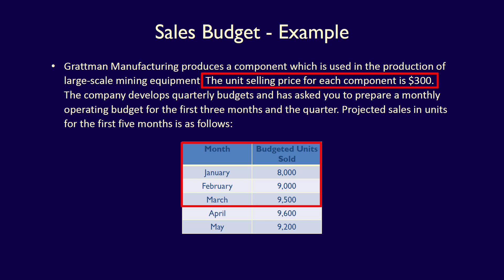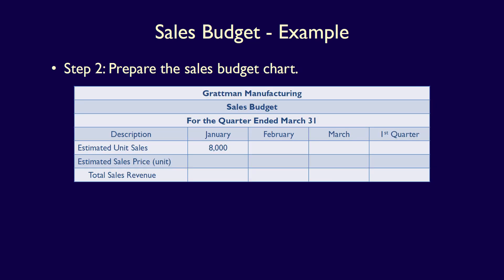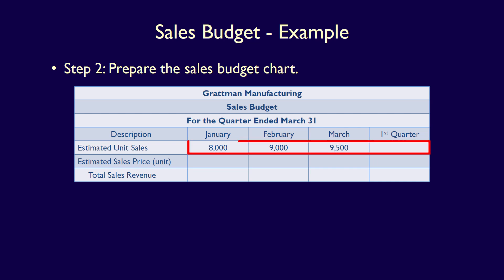We also have the unit selling price of $300. We can now place that information in the chart, including the units across the first row: January 8,000, February 9,000, and March 9,500. The first quarter column — also called simply total — is the summation of the months: 8,000 plus 9,000 plus 9,500 is equal to 26,500 units.